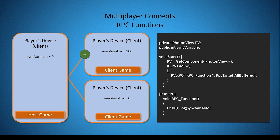To call your RPC function you first need to access a PhotonView. Here I have my PV variable, then I call dot RPC and within parentheses we pass in some parameters. The first parameter is the name of your RPC function in quotes. The second parameter is the target — who you want the RPC function sent to. To specify a target you type RPCTarget, and within this enum there are a number of different options. Here I've used AllBuffered.